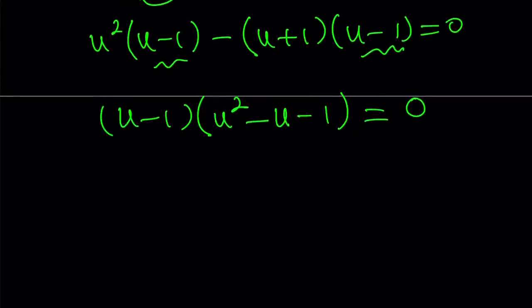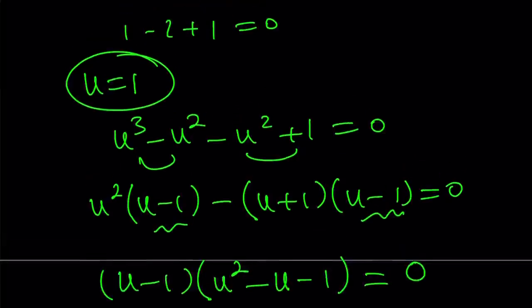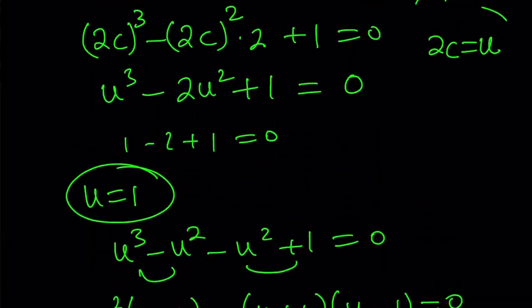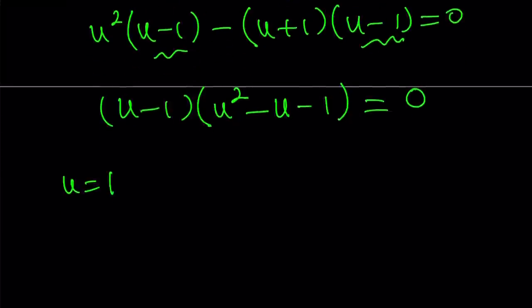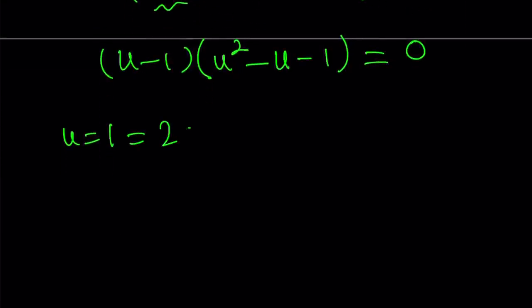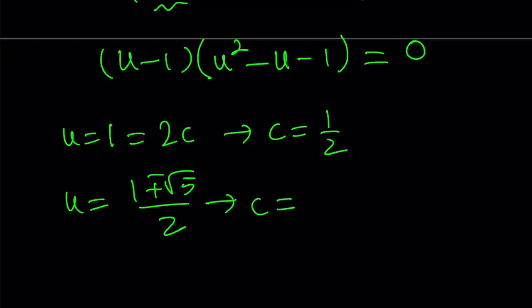From here, u equals 1. But remember, u is 2c. 2c or not 2c. So, set it equal to 2c. From here, you get c equals 1/2. What about the other solutions? Well, the quadratic gives me 1 plus minus the square root of 5 over 2. Divide by 2, you get 1 plus minus square root of 5 divided by 4.